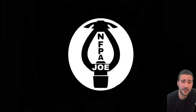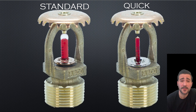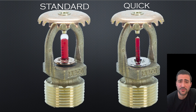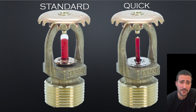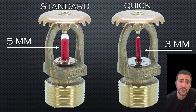This video is on the difference between the standard response and the quick response fire sprinkler head. Let's take a look at these two heads. If you notice two different sized bulbs — you are correct. We have two reliable standard spray uprights. Everything is the same except for the bulbs. The standard response utilizes a five millimeter bulb while the quick response utilizes a three millimeter bulb.